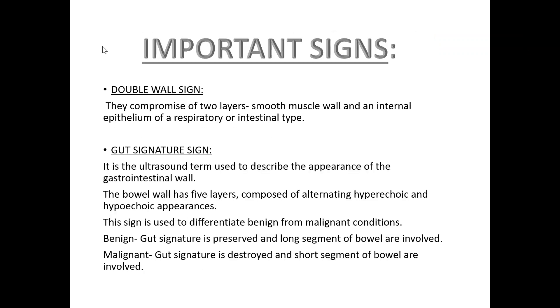Now we will discuss some important signs related to this topic. First, the double wall sign. It comprises two layers: a smooth muscle wall and an internal epithelium of a respiratory or intestinal type.